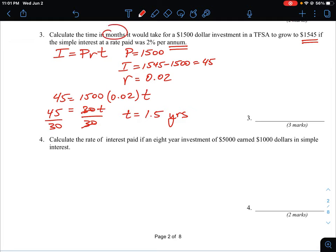But we're actually asked to calculate it in months. So you're going to have to do one extra step in this case. So we're going to have to take 1.5 years, and there are 12 months in every one year.